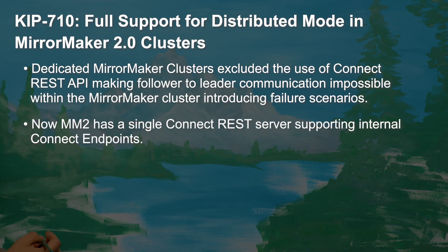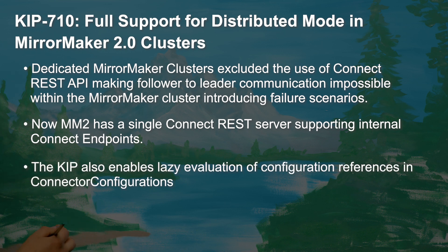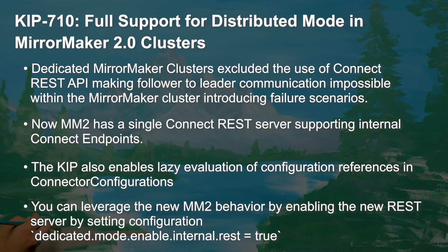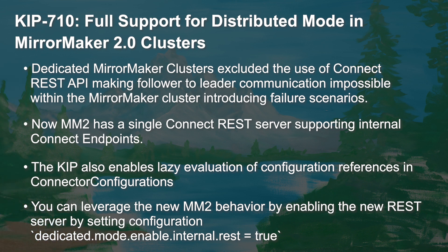Also in dedicated mode, MirrorMaker 2 eagerly resolves configuration provider references in connector configs, which meant that you were unable to provide host-specific or sensitive configurations through the indirection of configuration providers. To get around these limitations, KIP 710 provides the option to use an internal-only REST server that can be enabled by setting dedicated.mode.enable.internal.rest equal to true, and it allows for the lazy evaluation of configuration references.